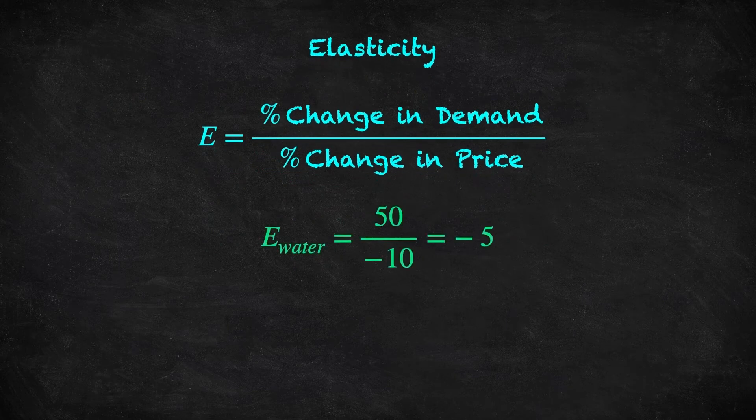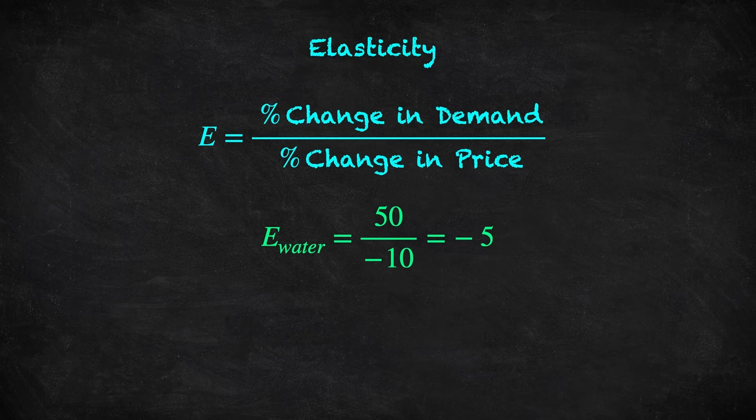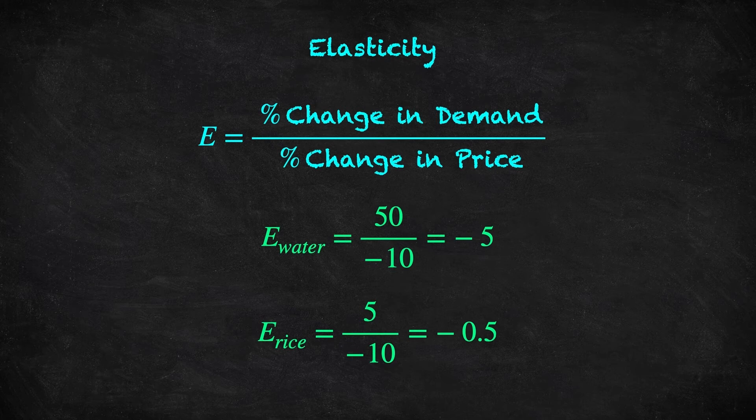If elasticity of demand for water equals minus 5, then a 10% decrease in the price leads to a 50% increase in demand. If the elasticity of demand for rice is negative 0.5, then a 10% decrease in the price leads to a 5% increase in demand. Even though we're comparing different goods, sold in different units, in different currencies, we can now claim that demand for water is more responsive to price changes, actually 10 times more responsive, by comparing the elasticities.